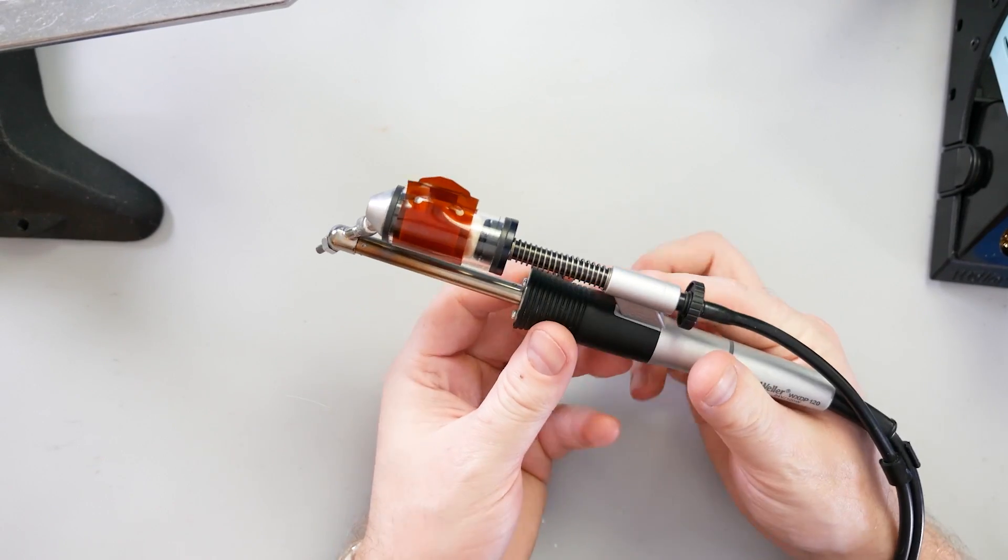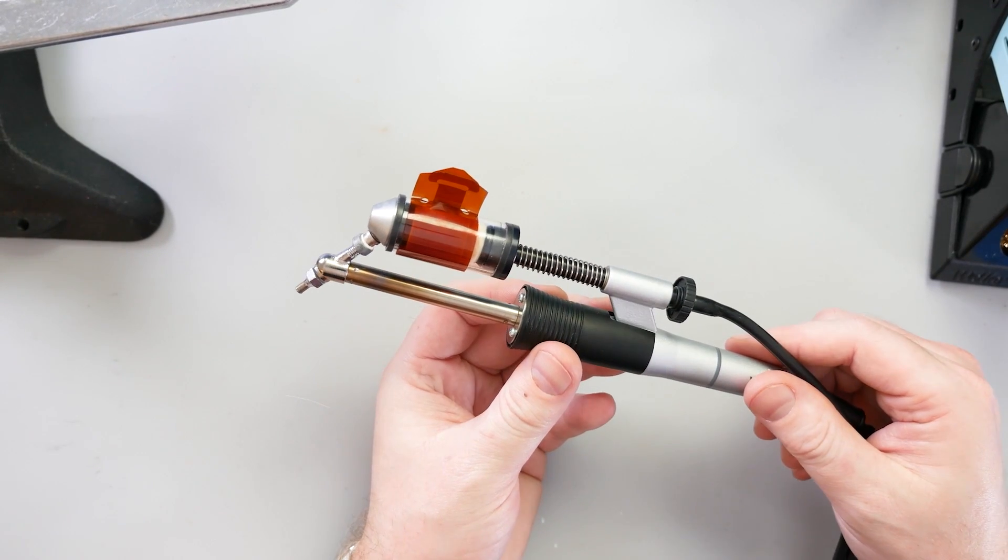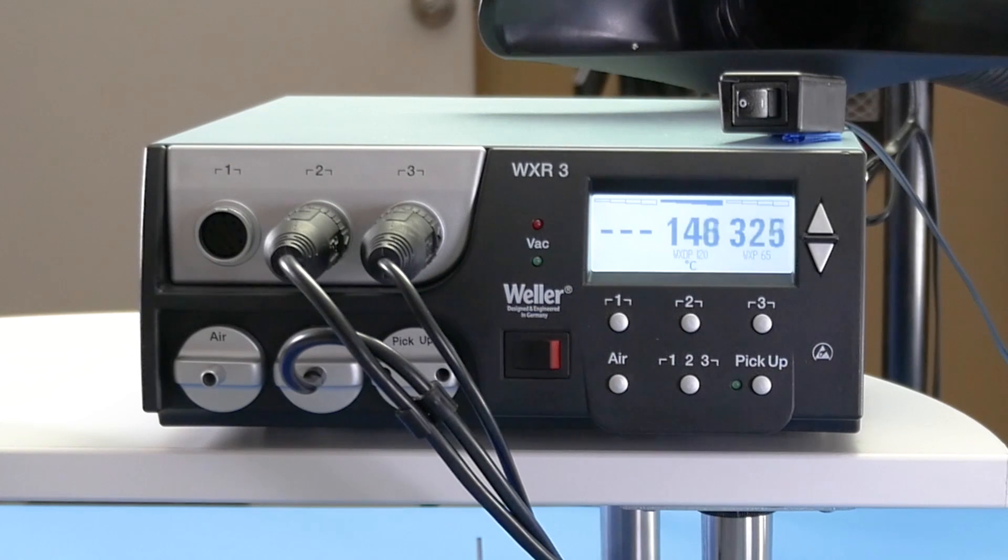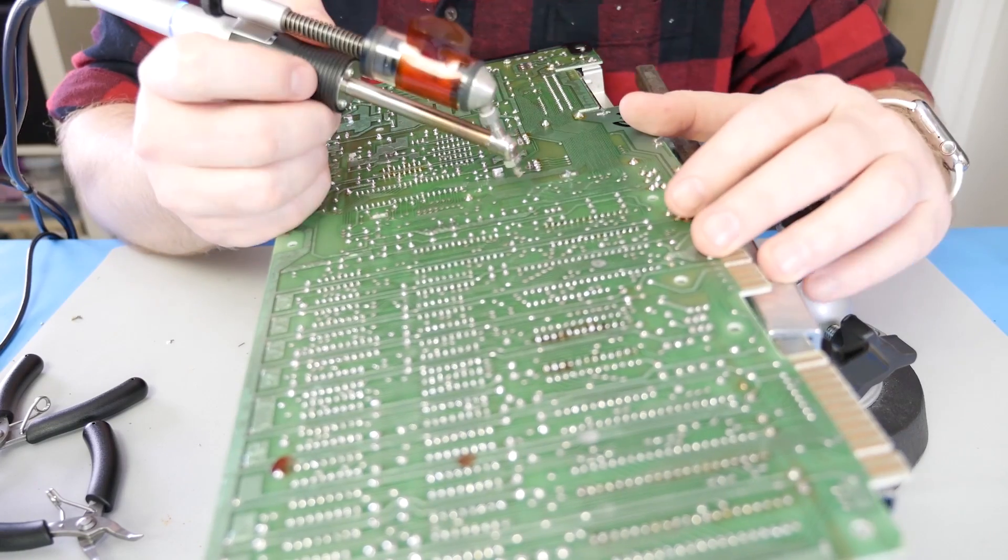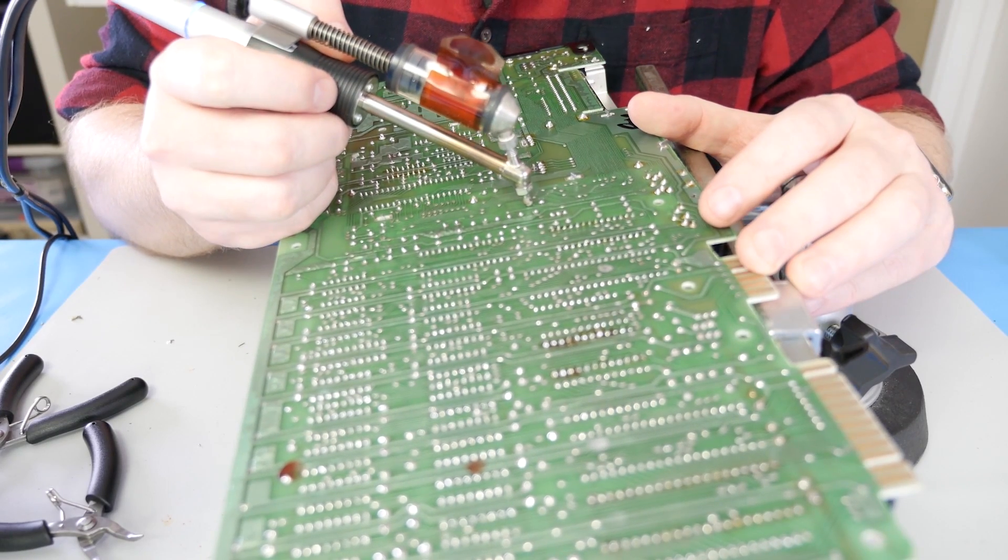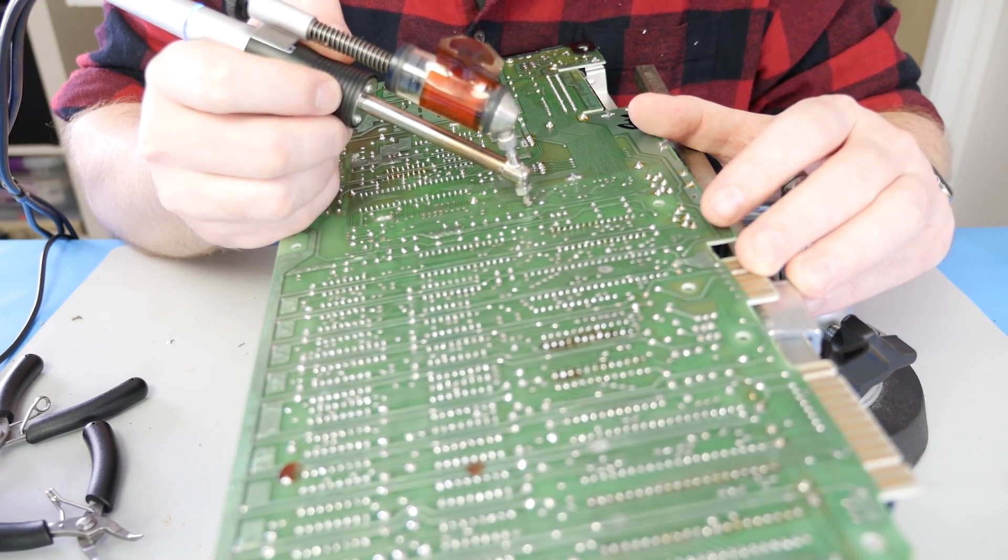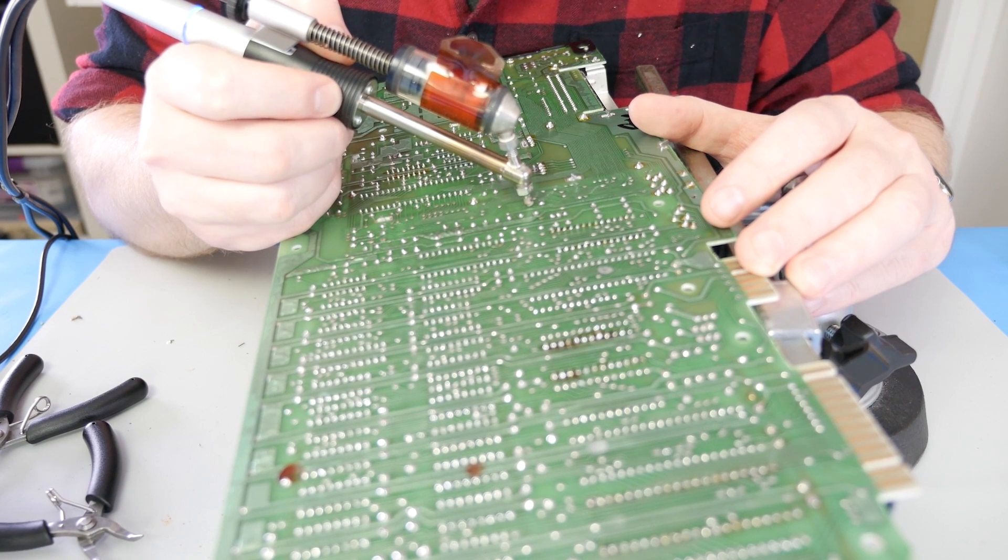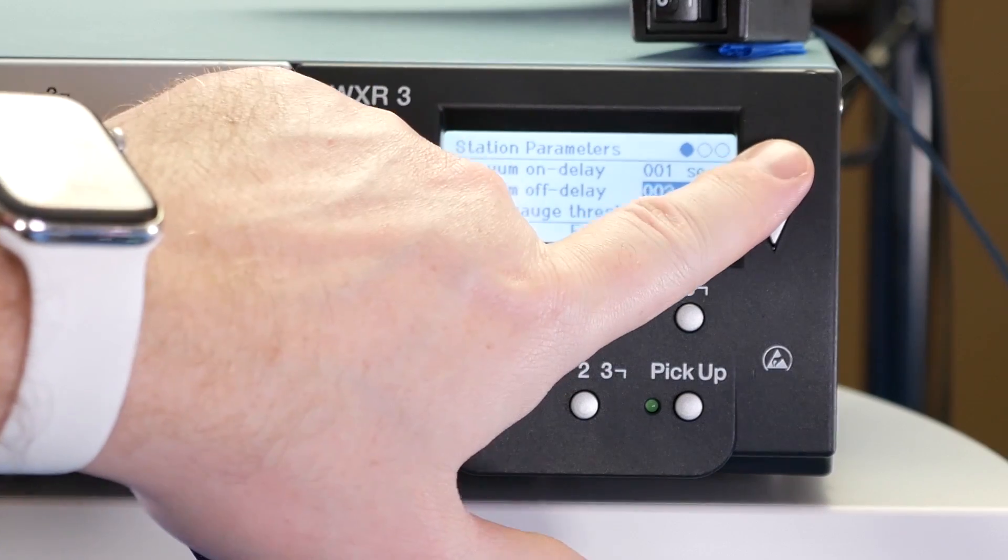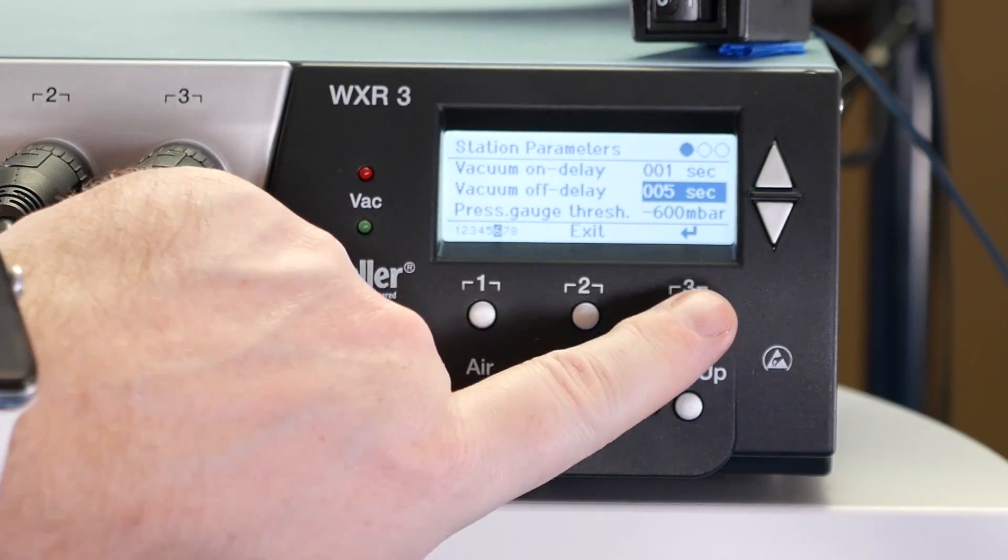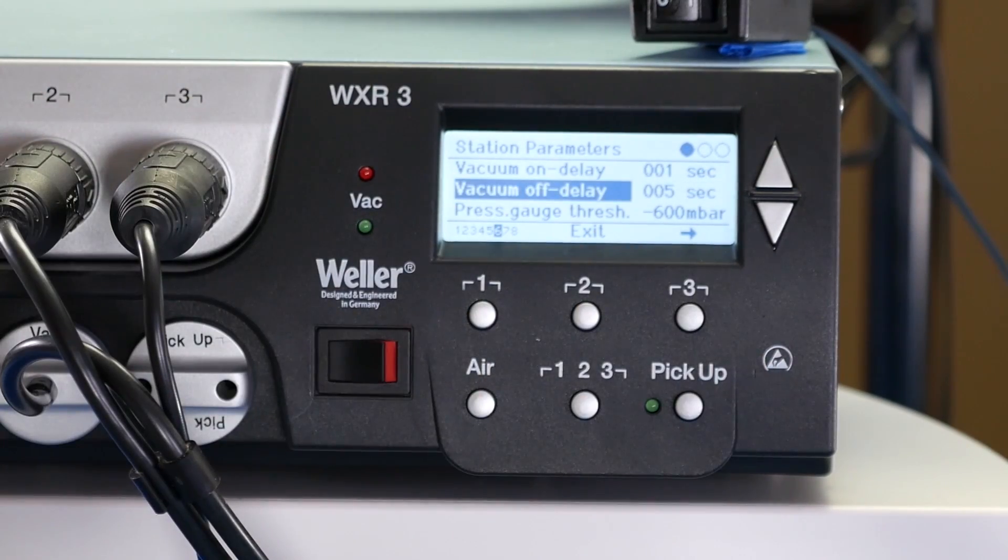This tool is the Weller WXDP 120D soldering iron. It connects to the WXR3's vac input and one of the heating channels. The tip heats up the solder joint and then a button activates the vacuum which sucks out the solder. By default, the pump stays on as long as the button is pressed. However, in the settings, you can set the delay on and delay off times independently, which I did.